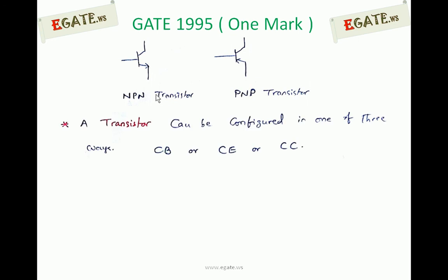Common base, common collector and common emitter. Whenever you are buying a transistor, it has some limitations: the maximum collector current which it can tolerate, the maximum power dissipation, maximum VCE voltage and maximum temperature.